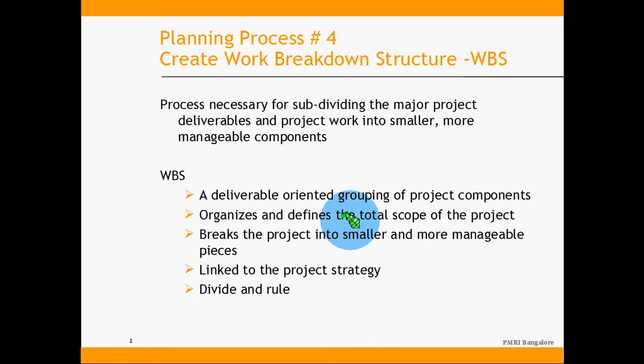There should be a one-to-one mapping between the scope document and the work breakdown structure, otherwise when you deliver the product some of the requirements given by the customer may not be met. The WBS breaks the project into smaller, more manageable pieces — work packages — to be managed individually. This is based on a divide-and-rule strategy.